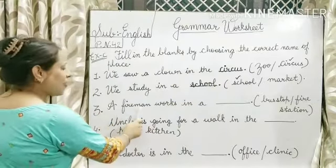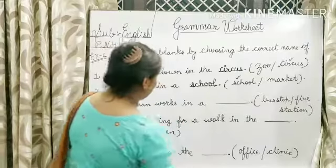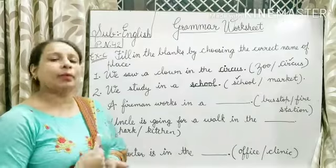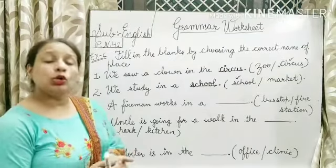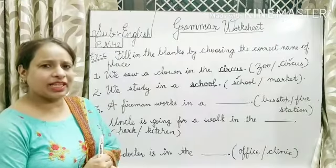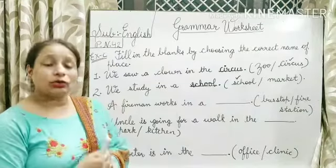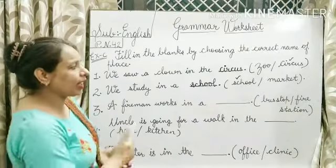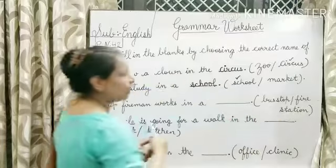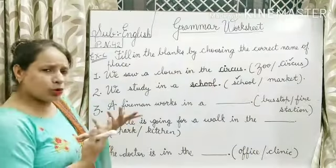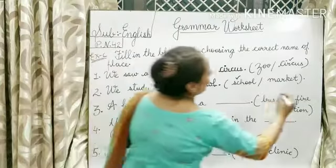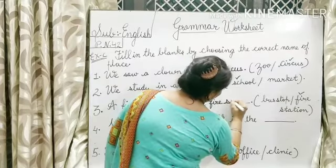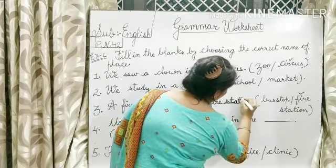Coming to the third one. A fireman works in a blank. Fireman kaun hota hai? Jo aag bujhata hai — damkal karmi hota hai. Jab kahan pe aag lag jaati hai, toh fire van jaati hai, fire bus jaati hai, aur woh aag bujhata hai. Aab fireman kaam kahan karta hai — bus stop pe ya fire station mein? Obviously, woh fire station mein kaam karta hai. So you have to tick on fire station and write F-I-R-E S-T-A-T-I-O-N, fire station.